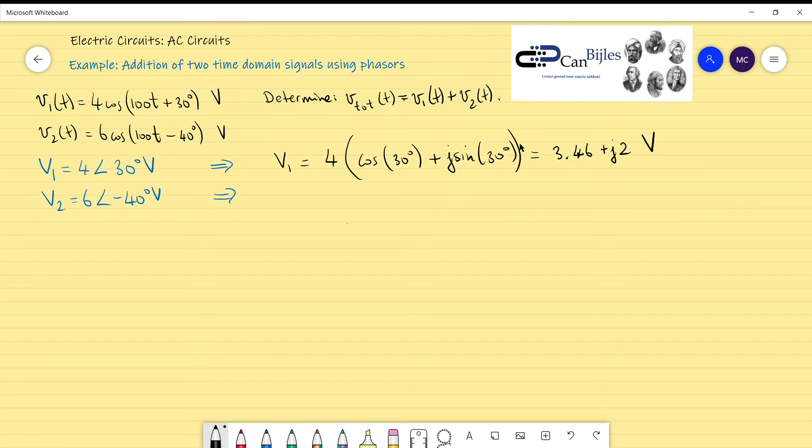For V2 it's actually the same operation: 6, and then the cosine of minus 40 degrees plus j sine of minus 40 degrees. Now if you count it out you get 4.60 minus j3.86 volts.